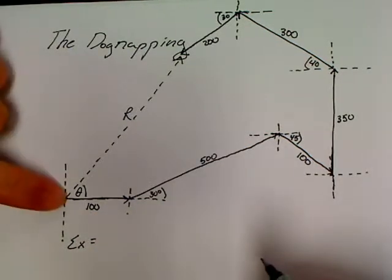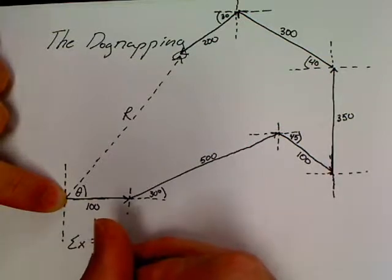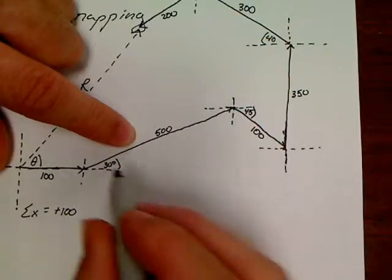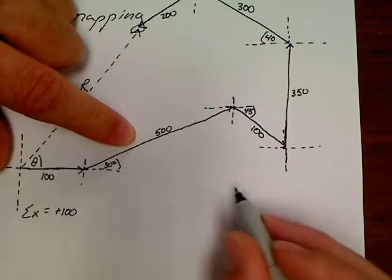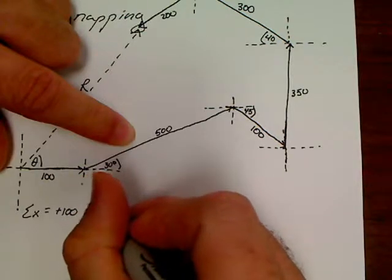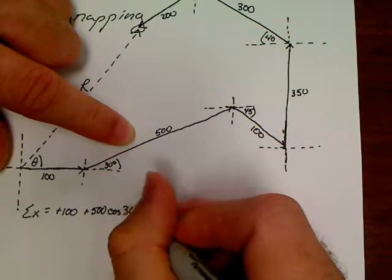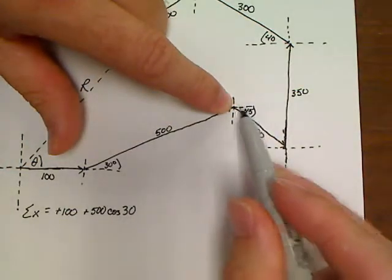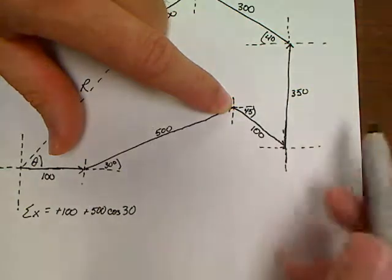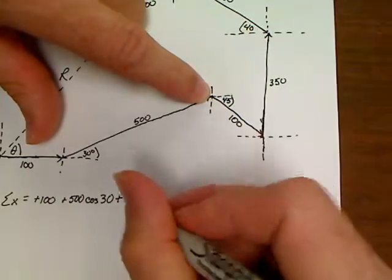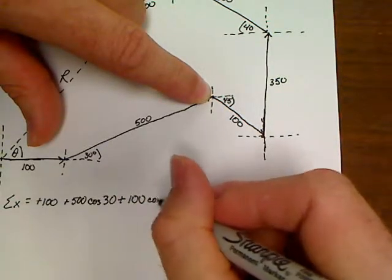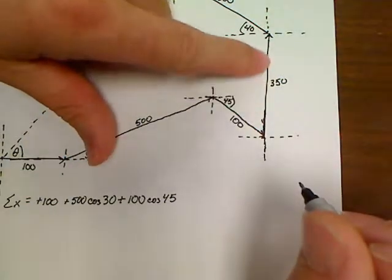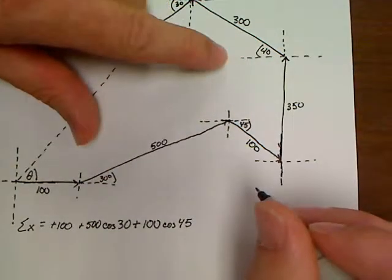Sum of the x's. So we'll start down here on the very first vector. It's a straight up positive 100. Then we get to this one. Its x component is in the positive x direction. So we'll say plus 500 cosine 30. And then we'll come over here. This one still has a positive x component. It's still moving to the right. So we'll write plus 100 cosine 45.